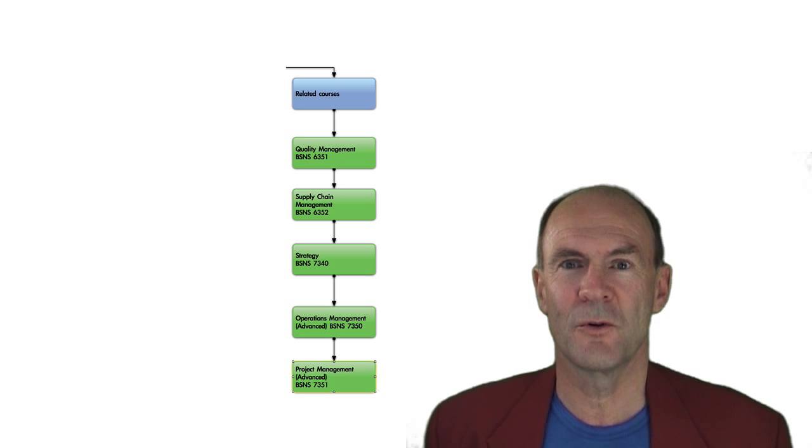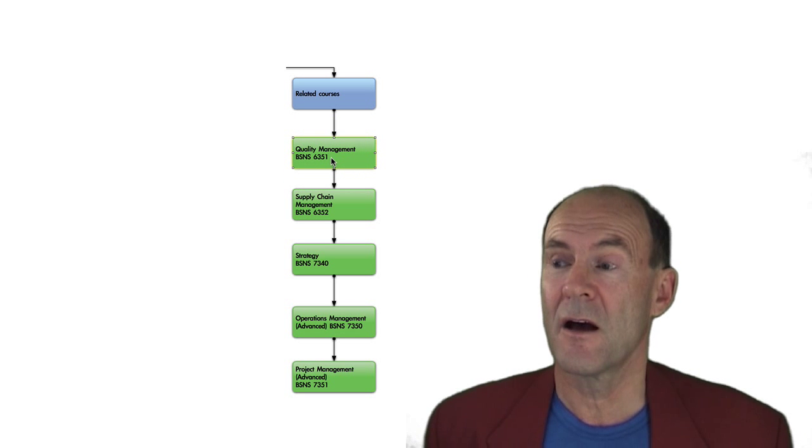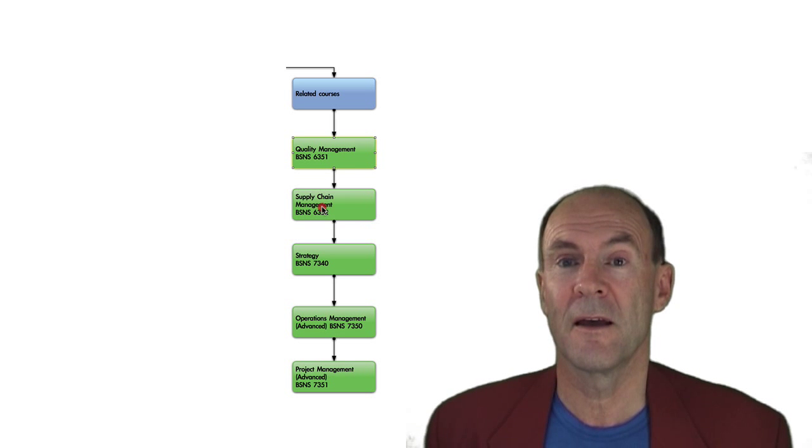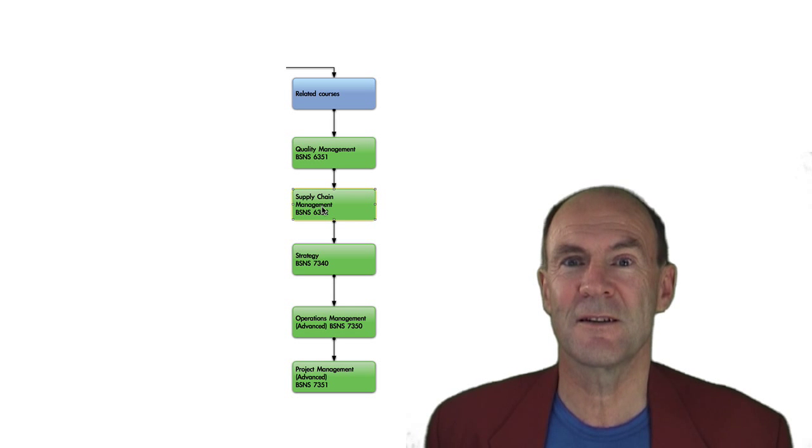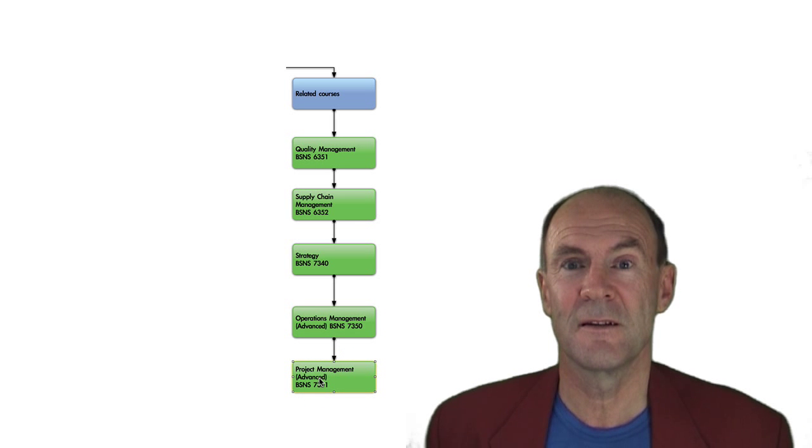How does this course relate to other courses as part of the Operations Management program at UNITEC? I've already explained how Business Process Improvement builds upon the first year course, Business Process Management. Business Process Improvement is a prerequisite for final year undergraduate courses at Level 7. Strategy and Business Process Improvement is a prerequisite for final year undergraduate courses at Level 7. BSNS 7340, Operations Management BSNS 7350 and Project Management BSNS 7351.